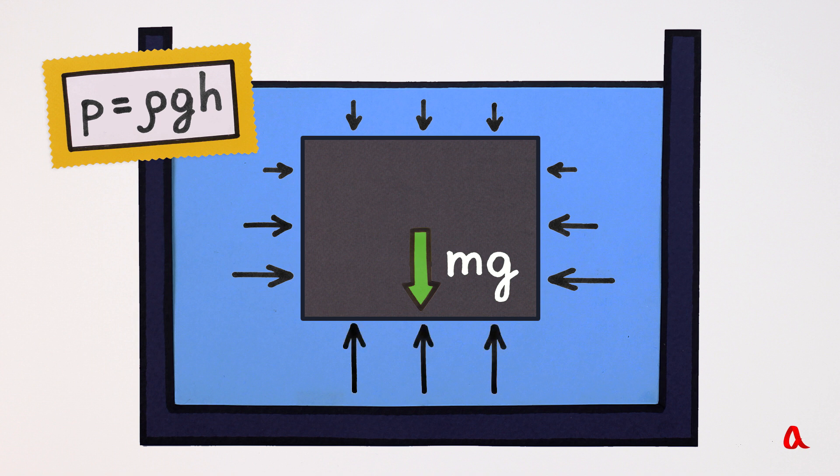Thus, the composite pressure force, which is also called Archimedean force, is directed upwards. It is this force that leads to the body's weight loss.